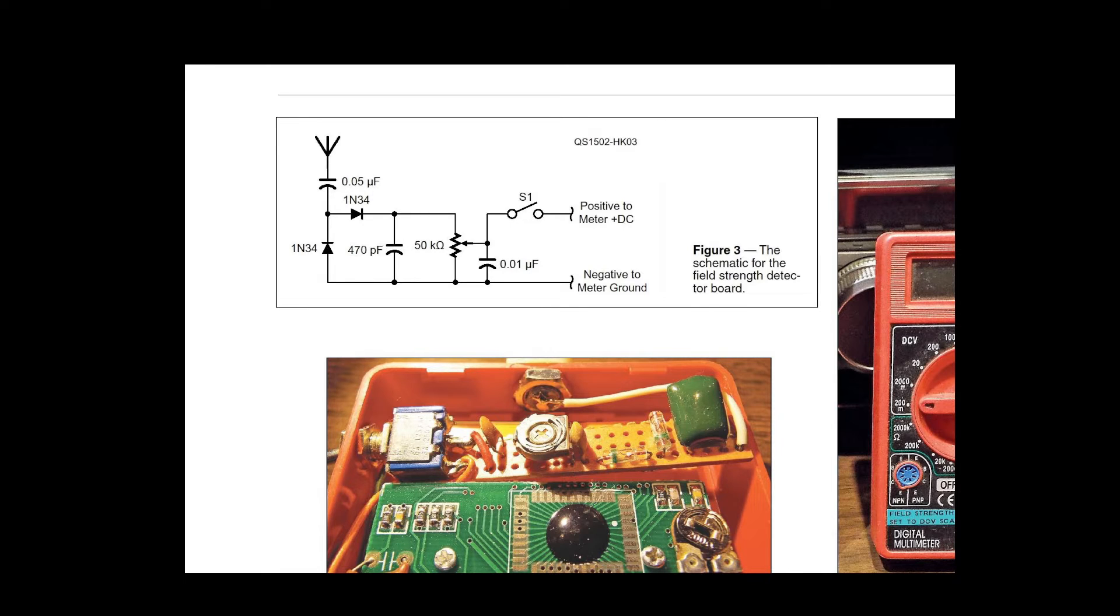We have our antenna come in through a 0.05 microfarad capacitor and then into two diodes. These on the schematic are marked 1N34. I was unable to source those so I had to get 1N34A, but they work just fine.